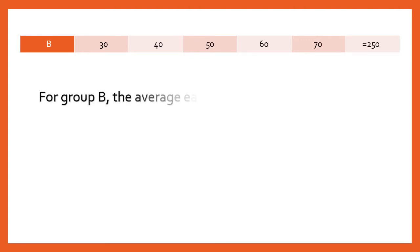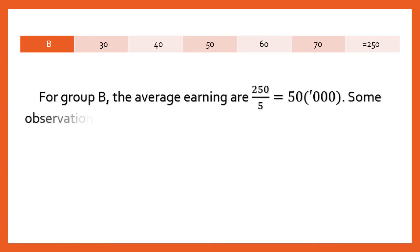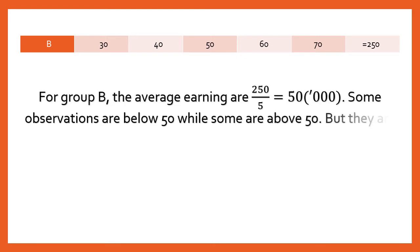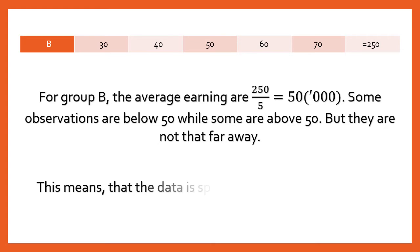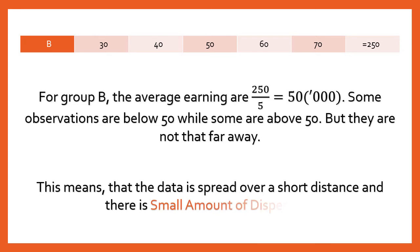For Group B, observations like 30, 40, 60, and 70 are pretty near the central tendency value of 50. So the data is spread over a very short distance and there is a small amount of dispersion, because the difference is not that big.